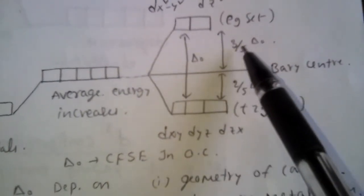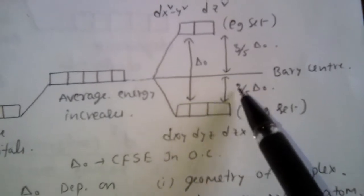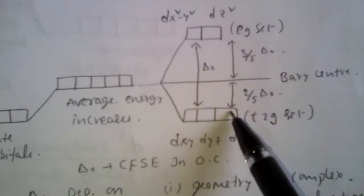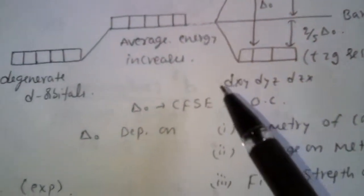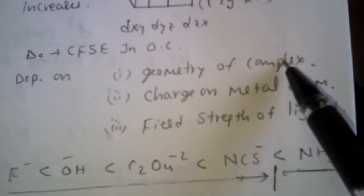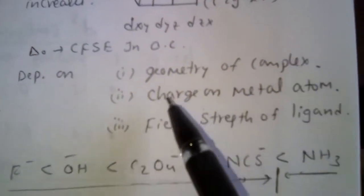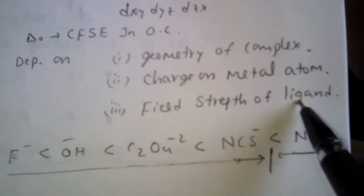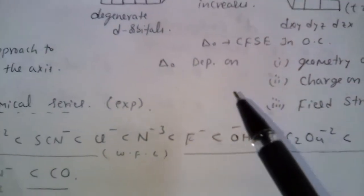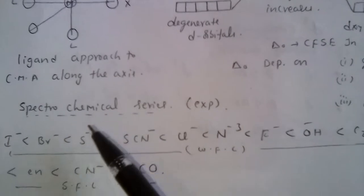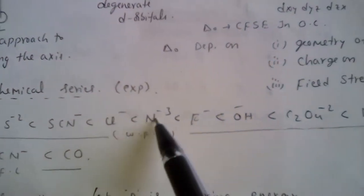The Eg set increases in energy by 3/5 Δ₀, and the T2g set decreases in energy by 2/5 Δ₀. The amount of energy decrease equals the amount of energy increase in the Eg set. The value of Δ₀ depends on the geometry of the complex — generally octahedral complexes have higher delta values — as well as the charge on the metal atom and the field strength of the ligand, which is determined experimentally. Arranging ligands in increasing order of field strength gives the spectrochemical series.